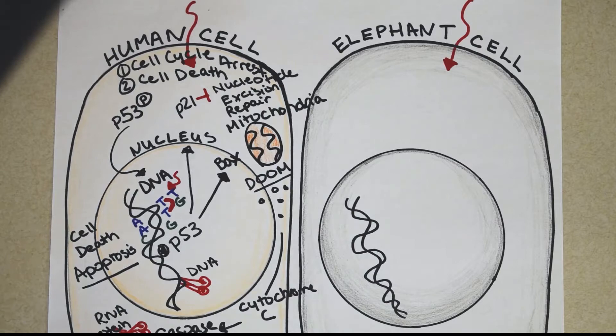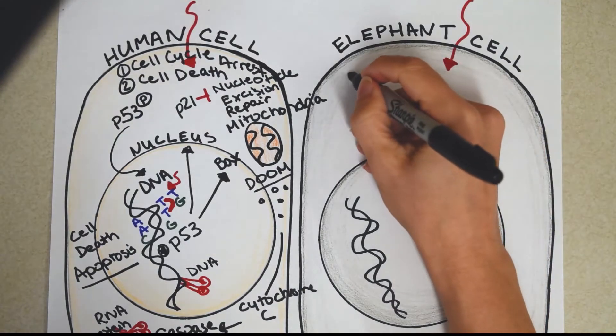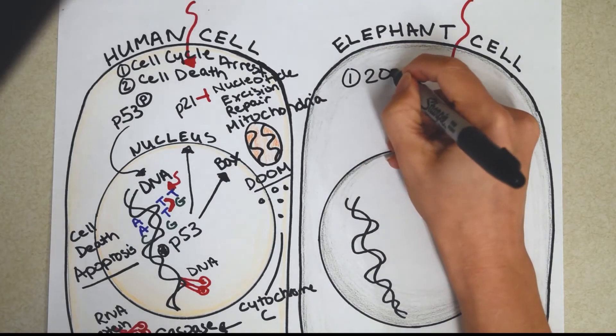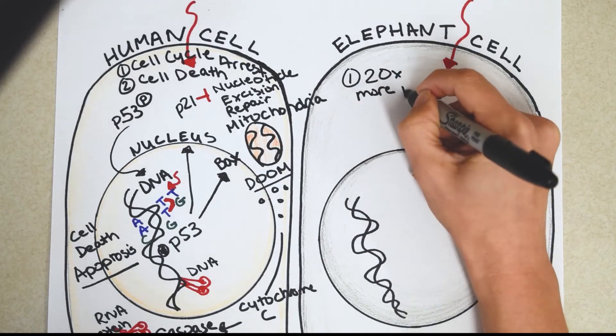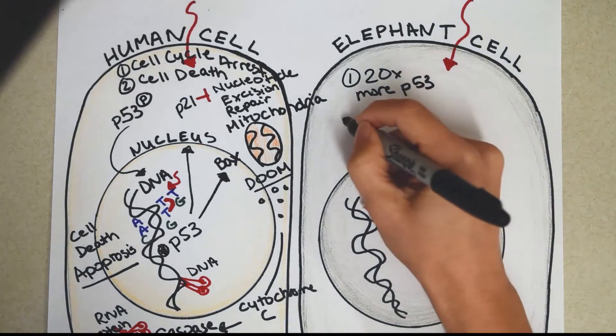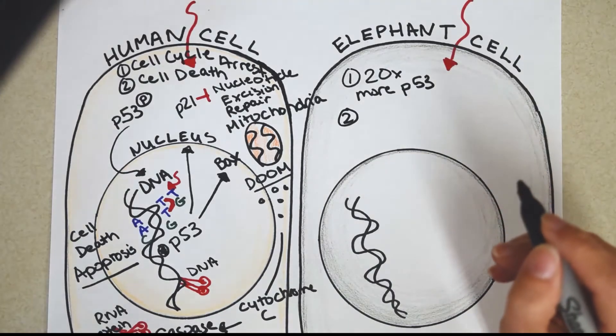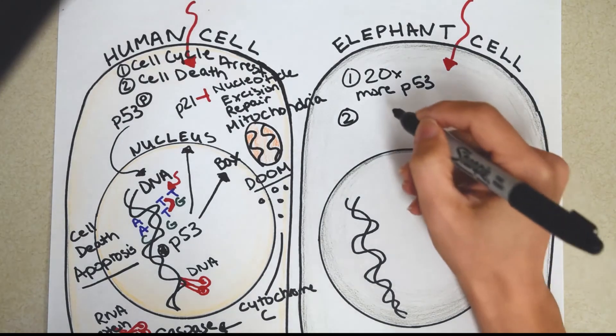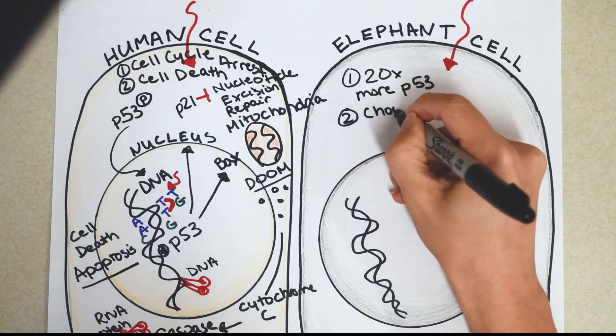Alright, so now you know the two different things that P53 can do. You're ready to hear the elephant's secret. So the elephant has two secrets. Secret number one, it has 20 times more P53 than you do. And the second secret, elephant cells, they don't mess around. They almost always choose cell death. Door number two. Choose cell death.